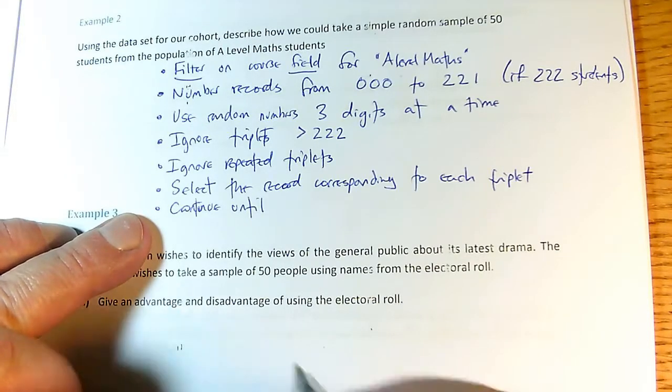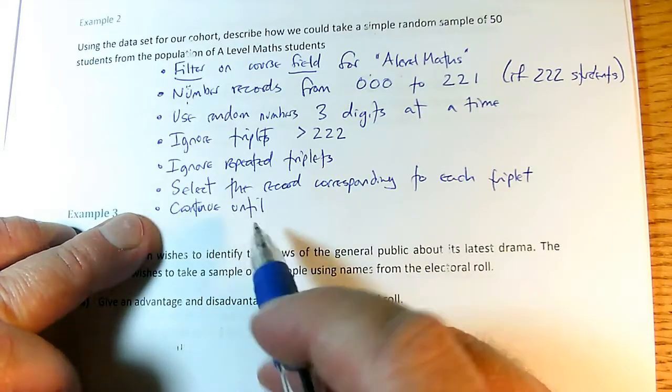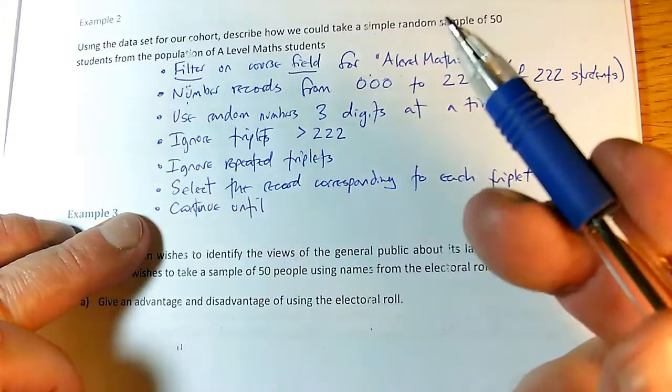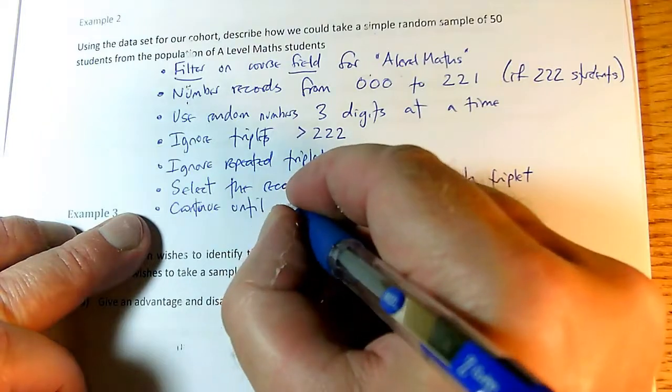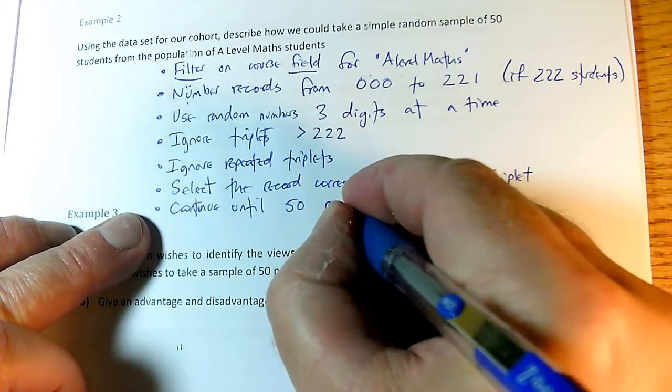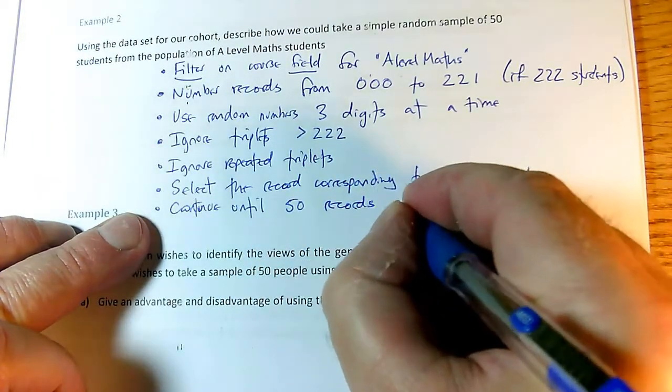And then the last one, again, blindingly obvious, how long do we continue? Well, the information's there in the question, but we still have to say we need to continue until 50 records have been selected.